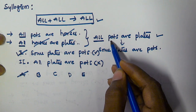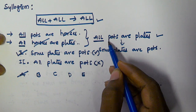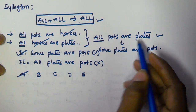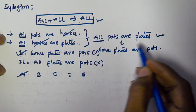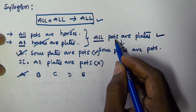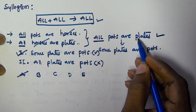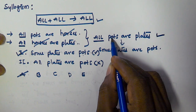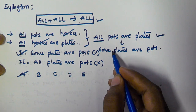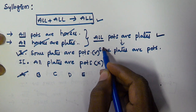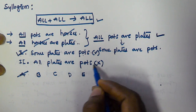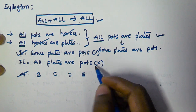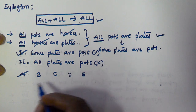The derived conclusion 'All parts are plates' does not match any of the given conclusions directly. So we derive a further conclusion: if we interchange plates and parts, 'all' becomes 'some,' giving us 'Some plates are parts.' This exactly matches conclusion one, so conclusion one is true. Conclusion two — 'All plates are parts' — does not match, so only conclusion one is true and we select option A.